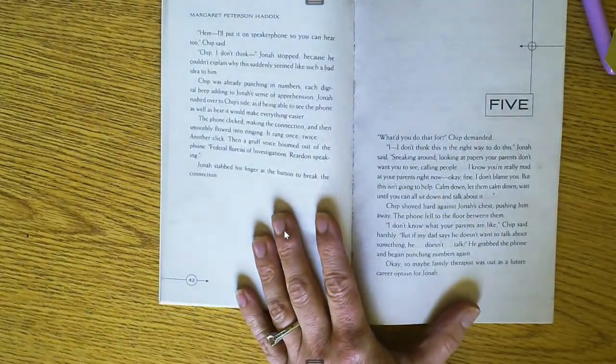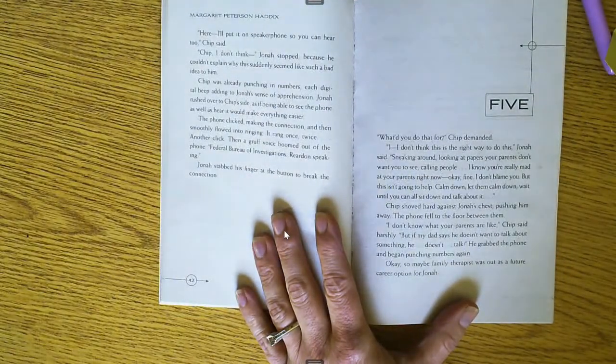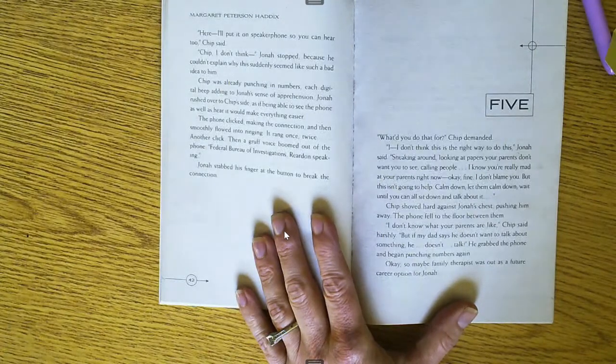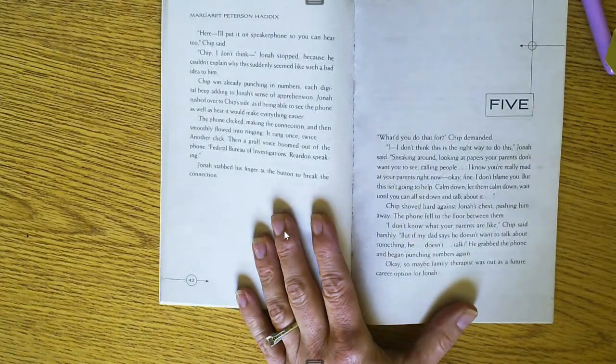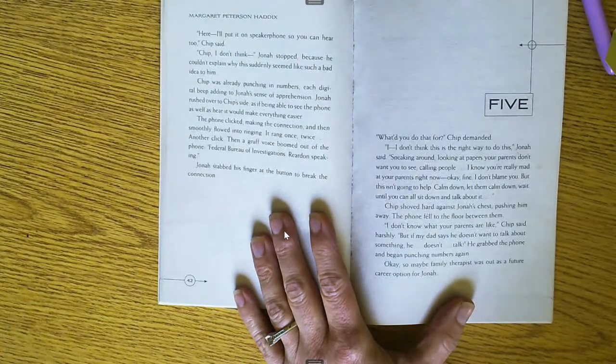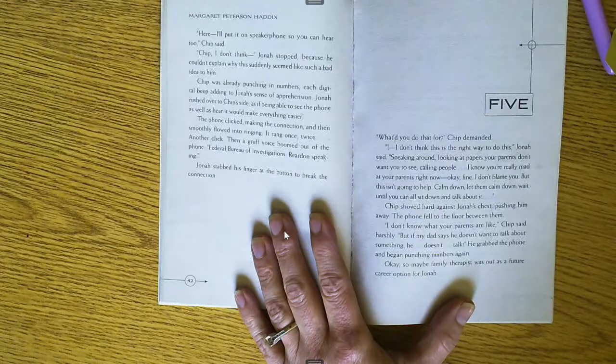What would you do that for, Chip demanded. I don't think this was right to do this, Jonah said, sneaking around, looking at papers your parents don't want you to see, calling people. I know you're really mad at your parents right now. Okay, fine. I don't blame you.